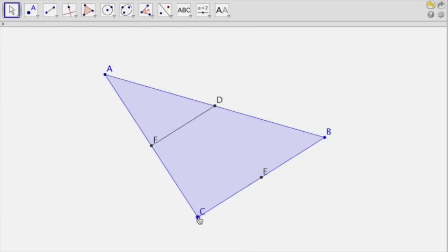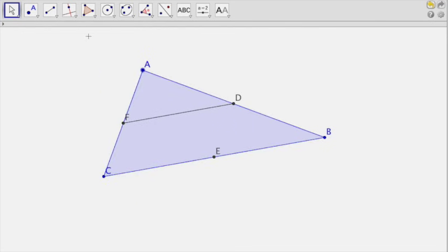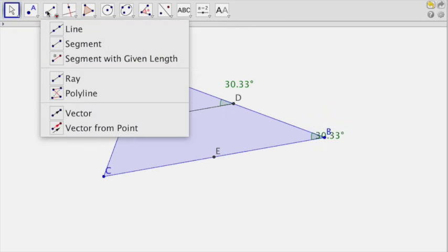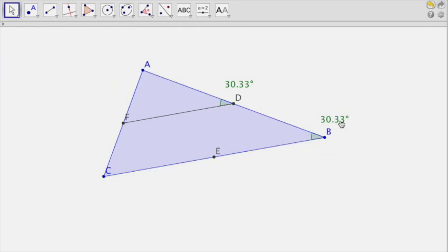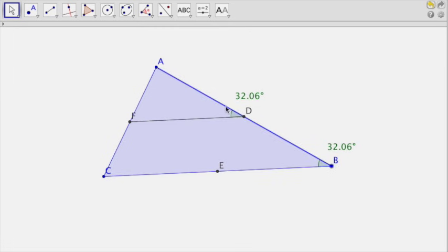And if I move it around, you can see it looks like it is staying parallel. There is one way to check if it's parallel. I can measure the angle here. If I measure angle ADF and I measure angle DBE, and I'll put that where you can see it, you can tell that those angles are congruent no matter where I move this.